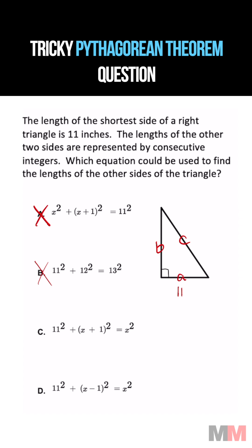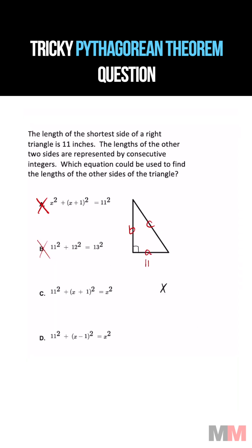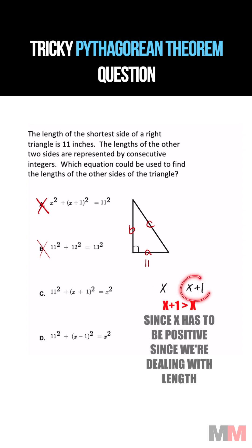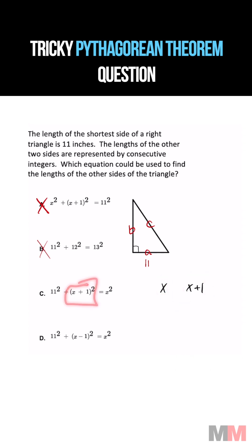You might be tempted to pick C because the expression for consecutive integers can be X and X plus 1. X plus 1 is larger than X if X is a positive integer, so this would make sense if this was the hypotenuse.